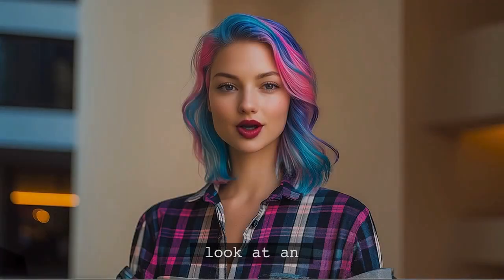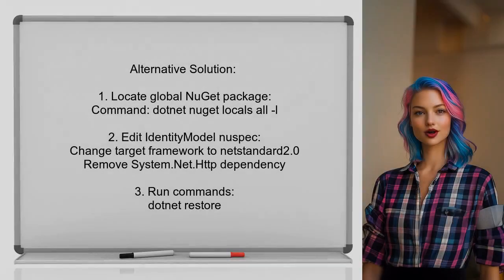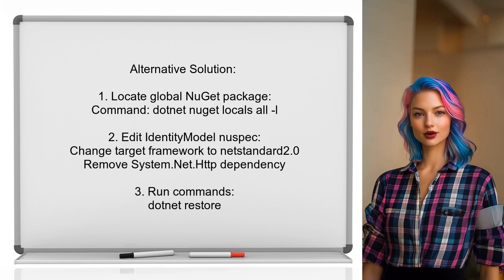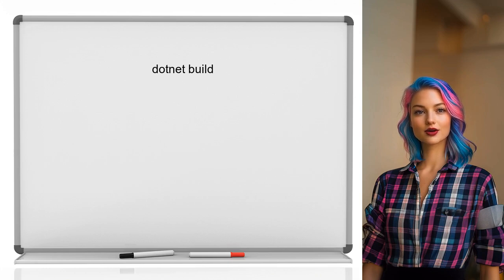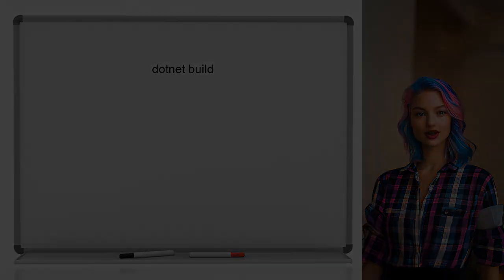Here's another alternative approach involving a workaround. First, locate your global NuGet package location using the command: dotnet nuget locals all -l. Next, edit the IdentityModel package's nuspec file to change the target framework to NetStandard 2.0 and remove the dependency on System.Net.Http. Finally, run dotnet restore and dotnet build to complete the process.